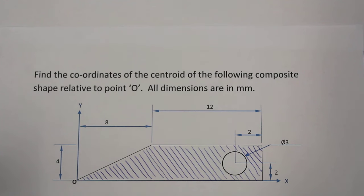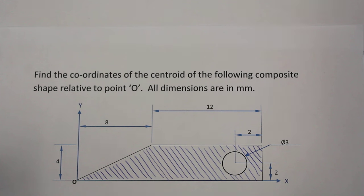In this video we're going to go through how to find the centroid of a composite shape. A composite shape is a section which can be made up of circles, rectangles, and other shapes where we know the centroid of that section. The first step in solving these types of problems is to take the section and break it up into the shapes for which we know the centroid.